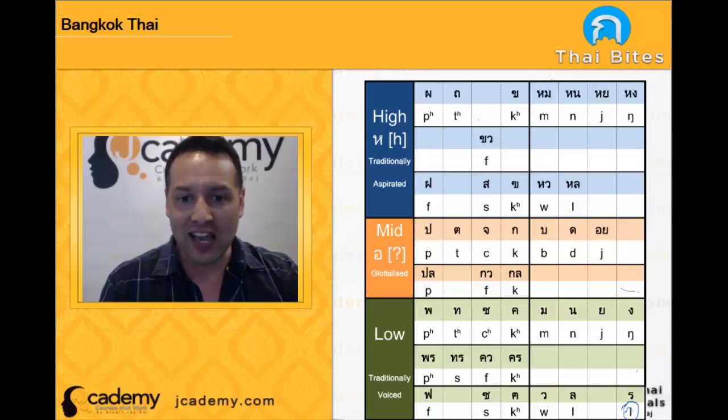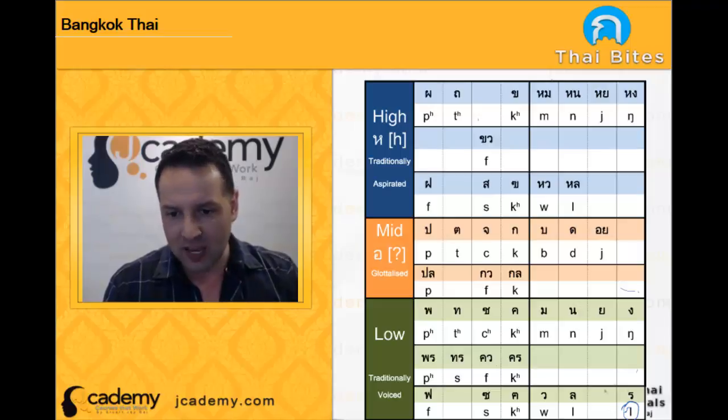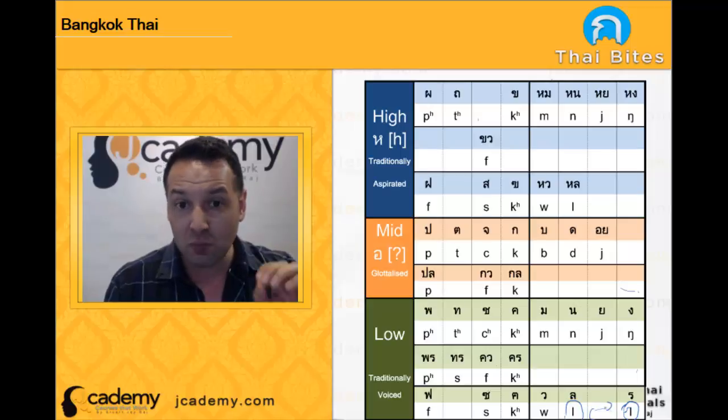So when you hear people in Bangkok say Lha Lho, they're saying the L. Lha Lho. It's actually an L, the same as Lha Lhing. These two, the way your tongue sits is identical in traditional Bangkok Thai.